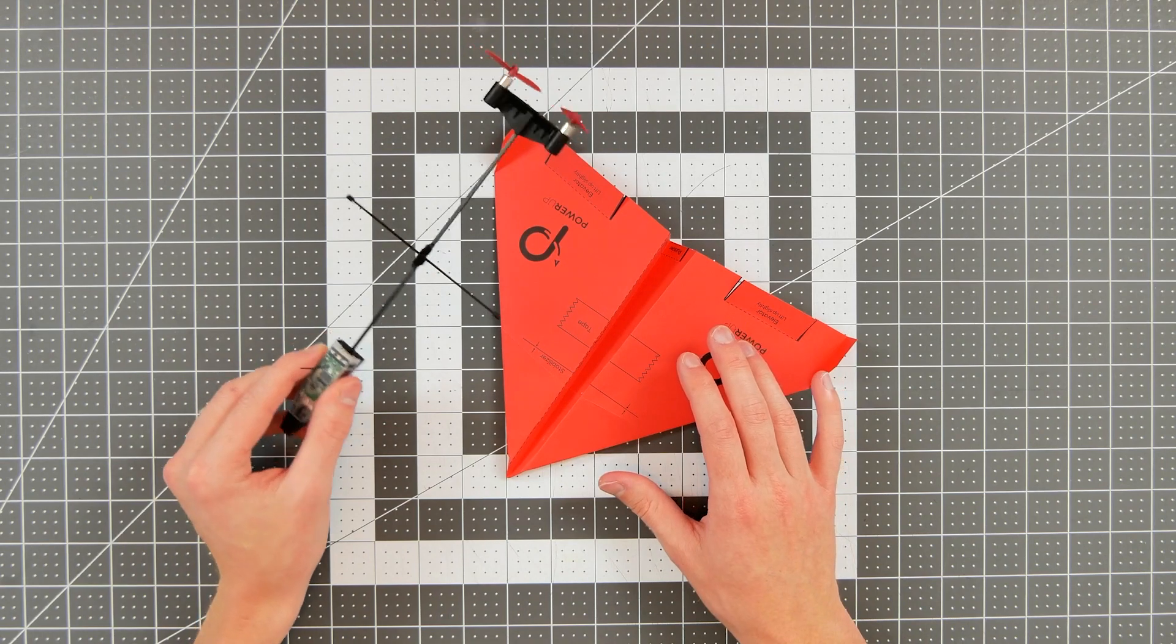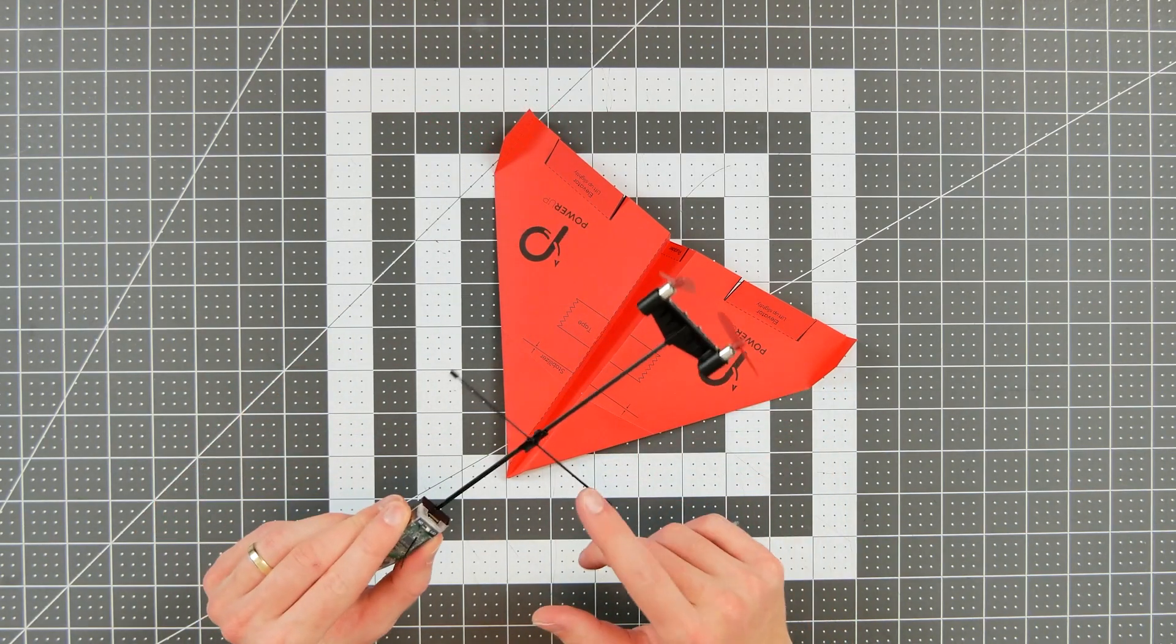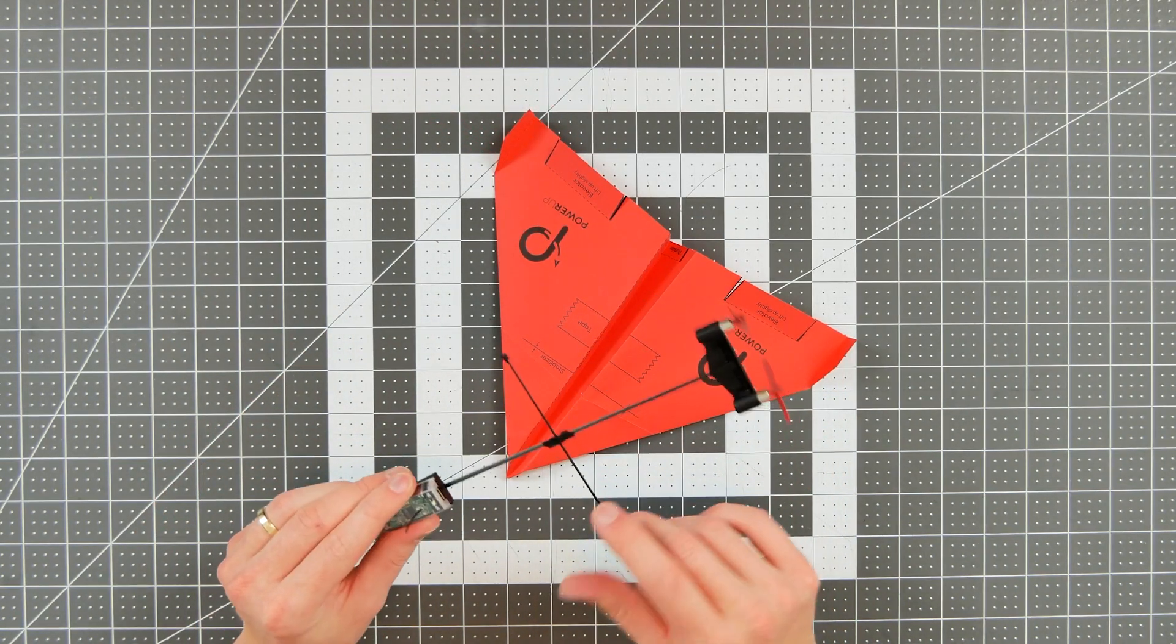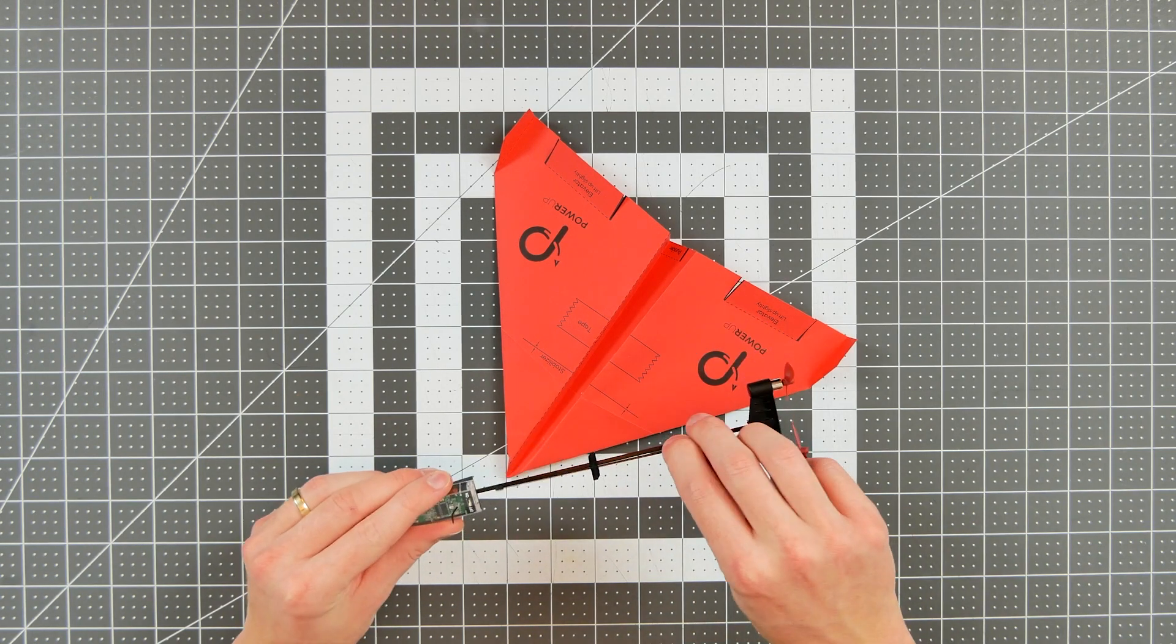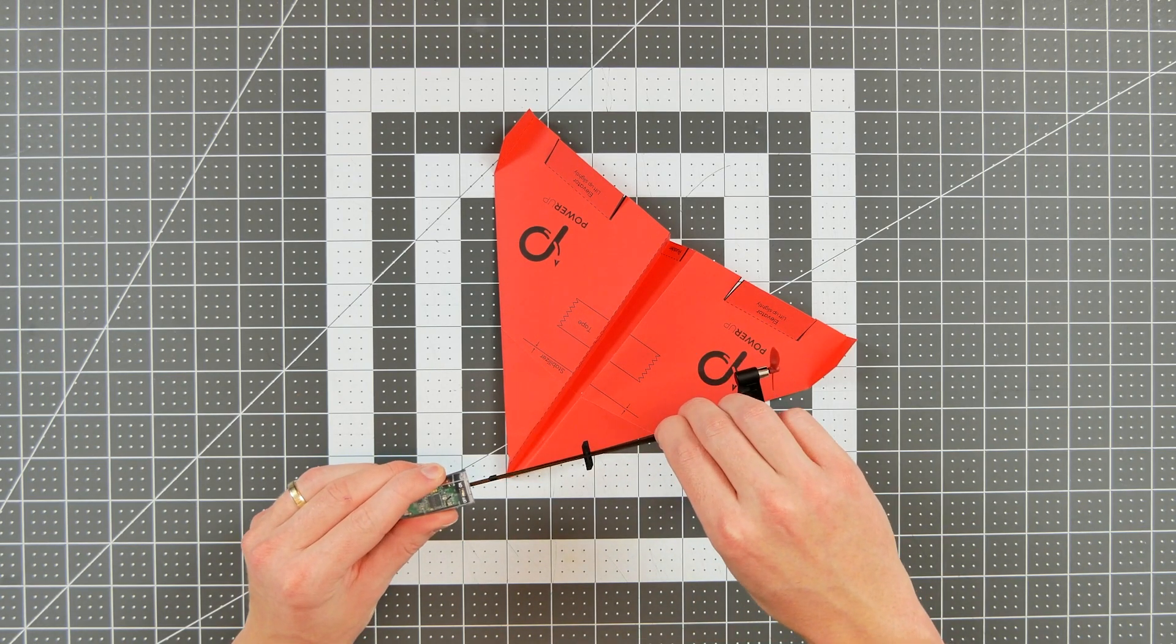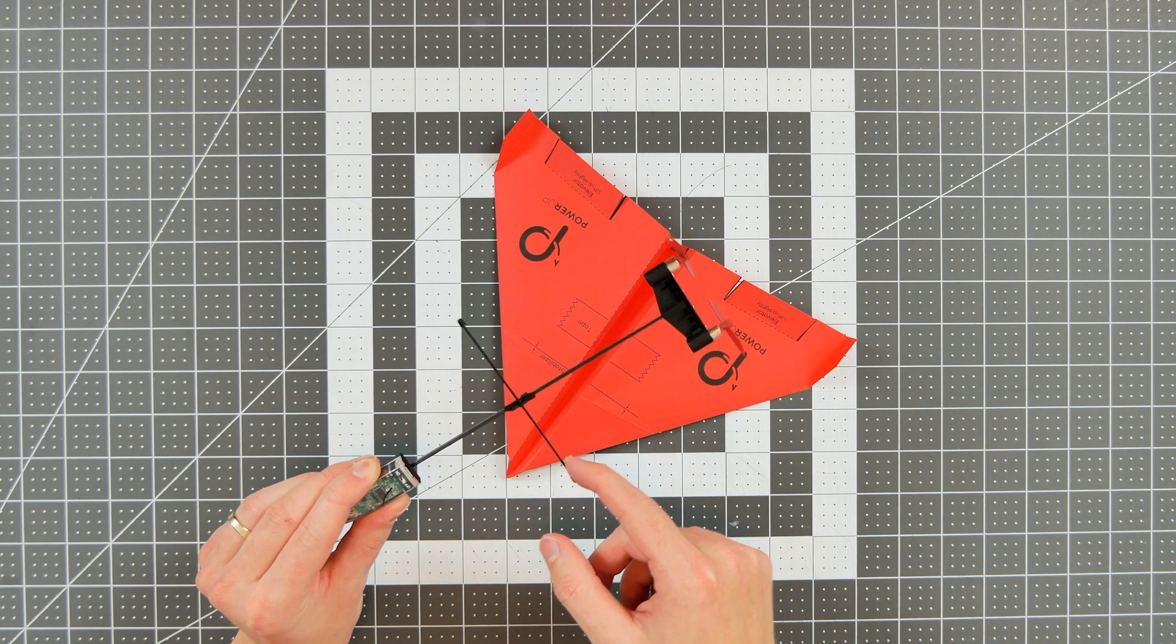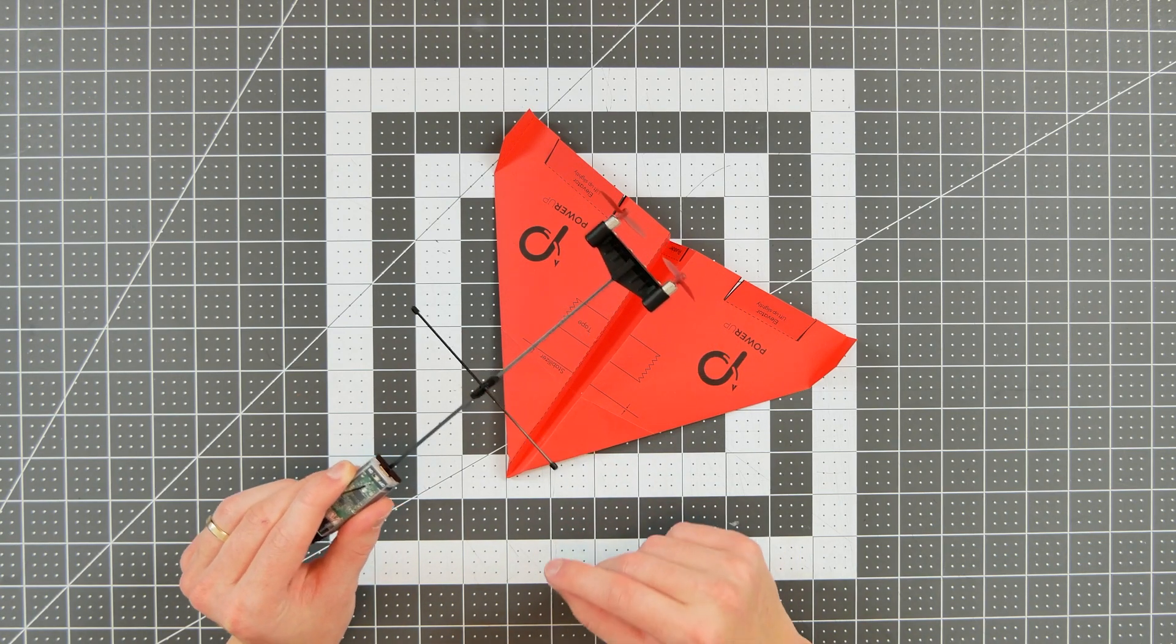Once you've constructed your plane, you're ready to attach your module to it. Now you can see that I've already put the crossbar on the module. And the way you do that is you align it kind of parallel with the shaft of the module. And you just twist it into place. And when you hear that click, you know that you're properly connected.